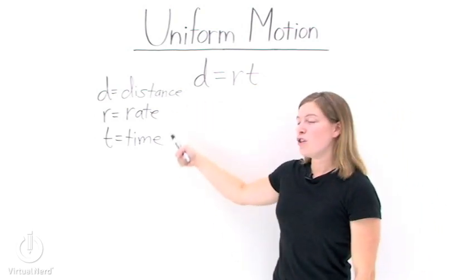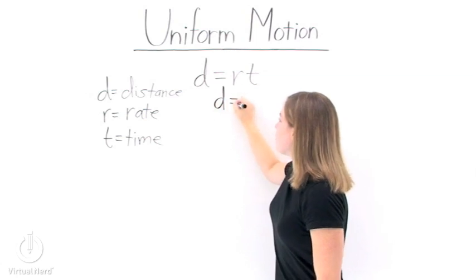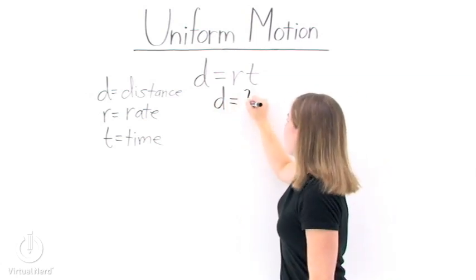Well, we need to pick out each one of our variables in our problem. What about d, distance? Well, distance is what we're trying to find, so we don't know that yet.